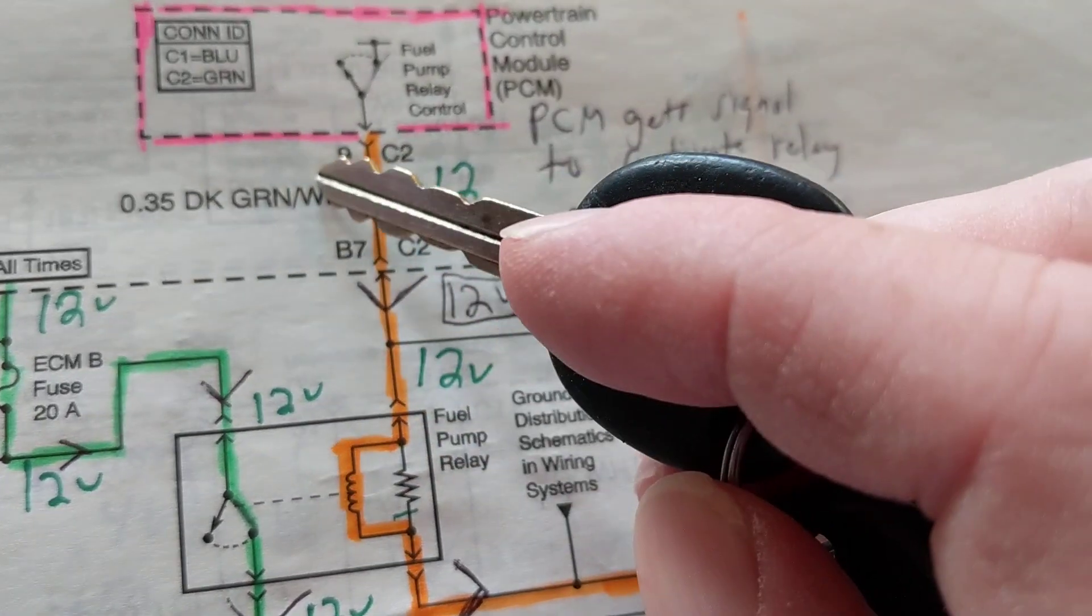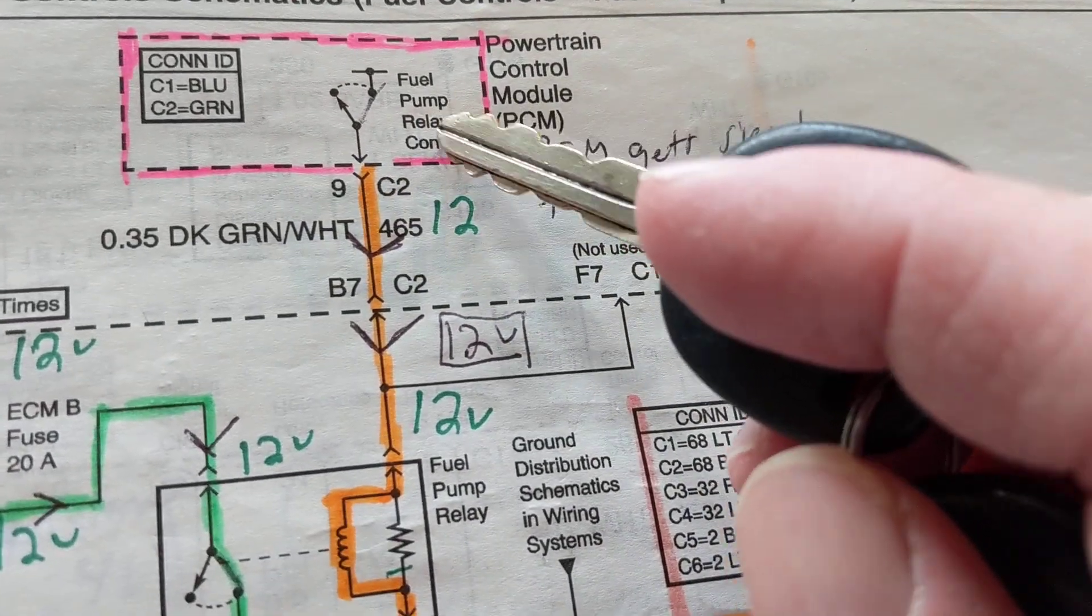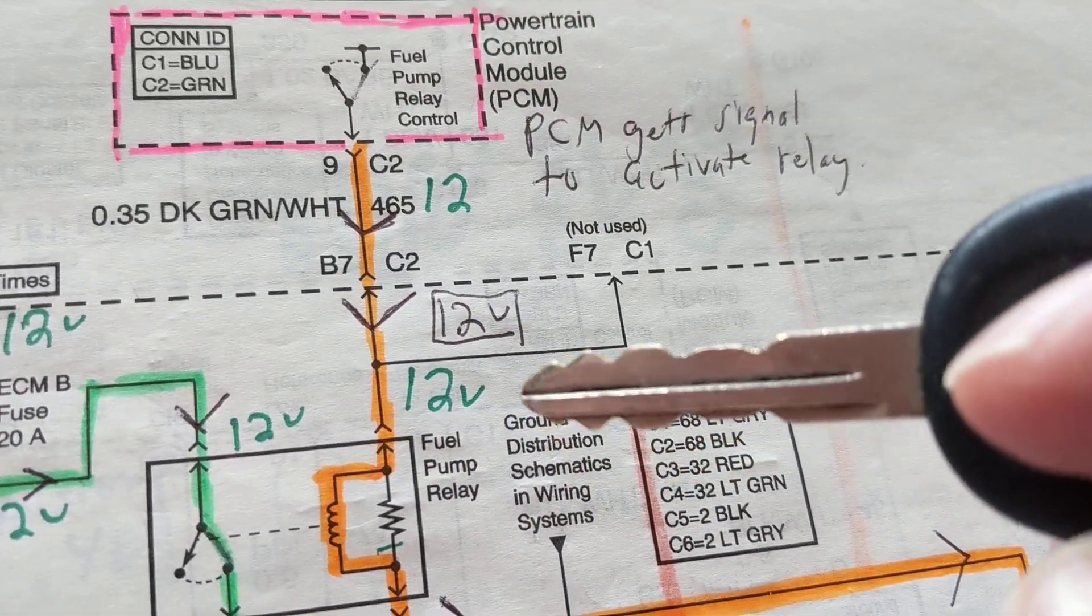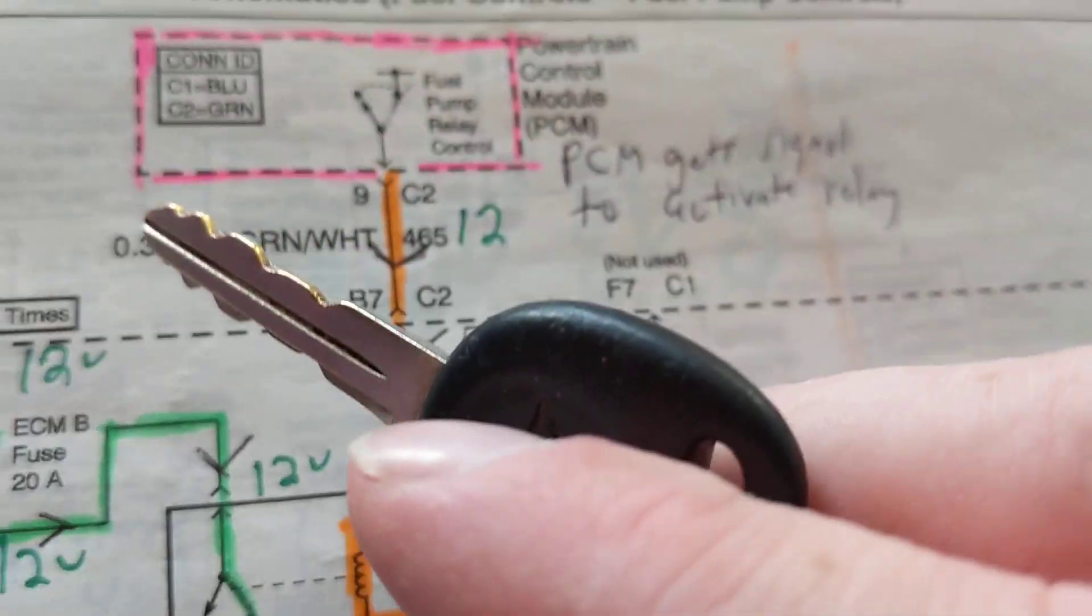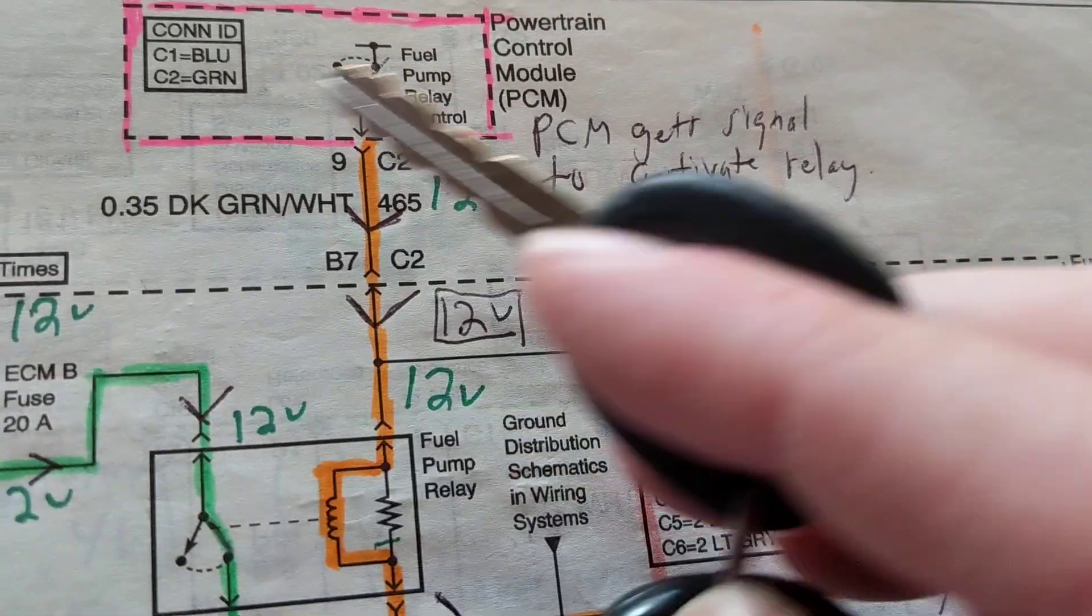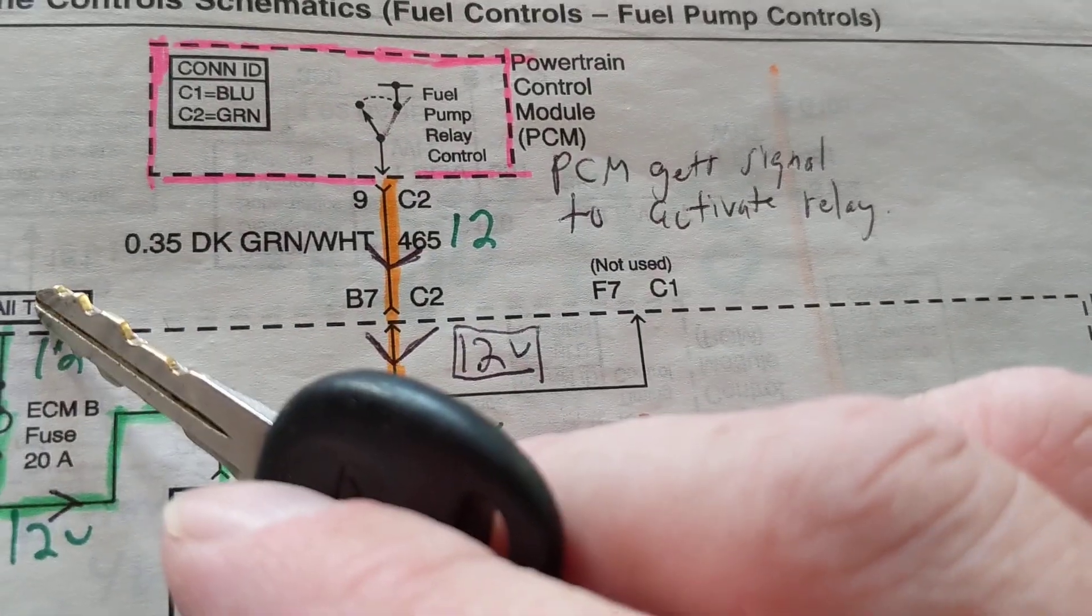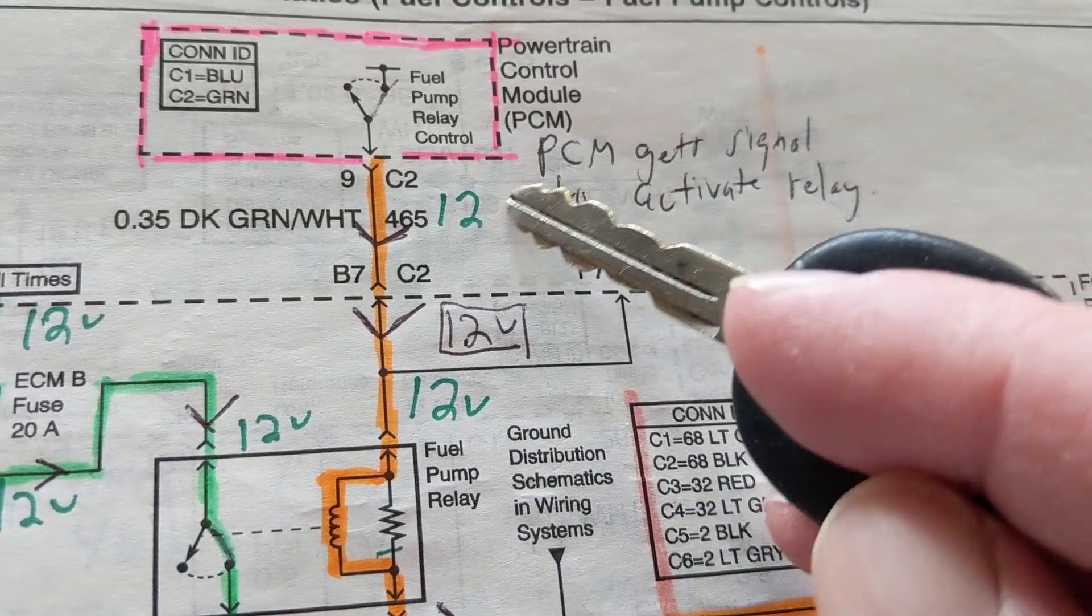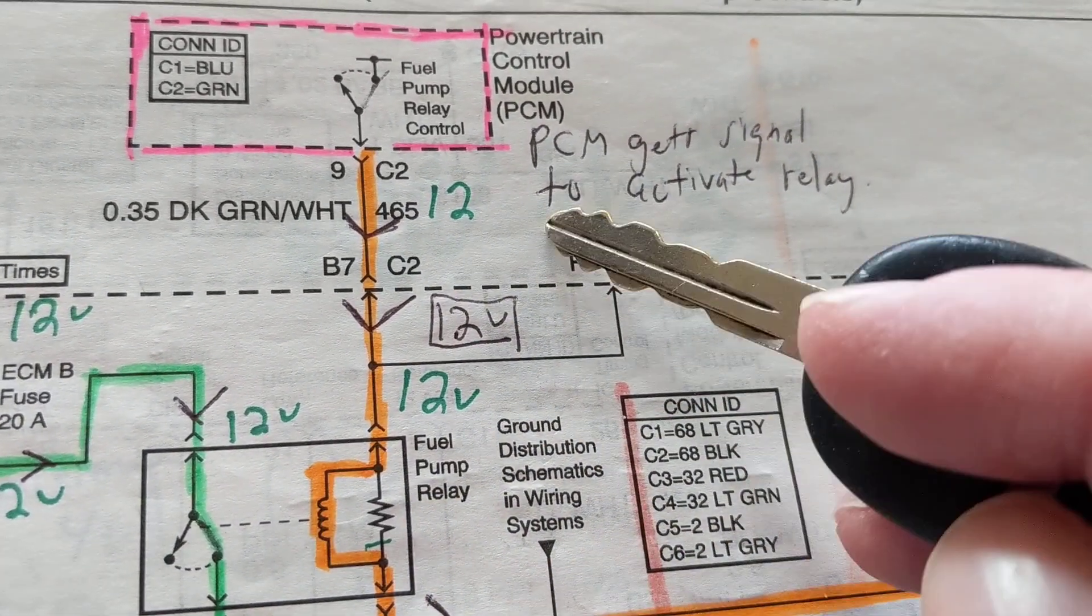But the body control module has to make a request to say, okay, I need you to turn on this fuel pump relay. He receives that email from the BCM. We're talking about two different things. The BCM is in charge of accessories. The PCM is in charge of starter motor and everything, and fuel pump relays and everything.